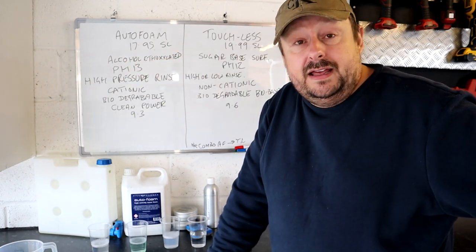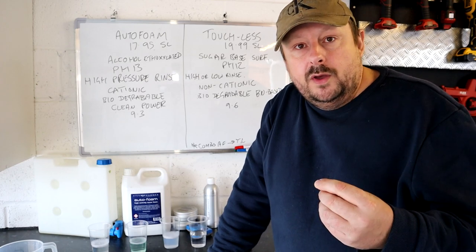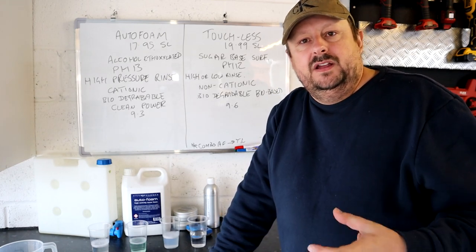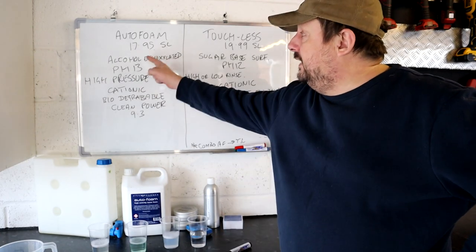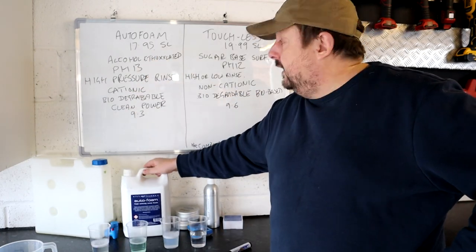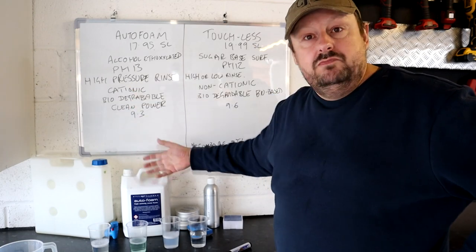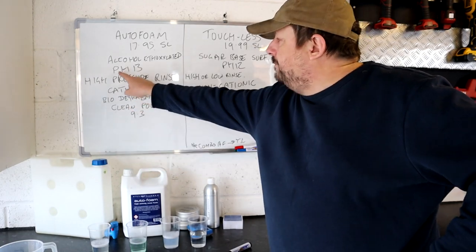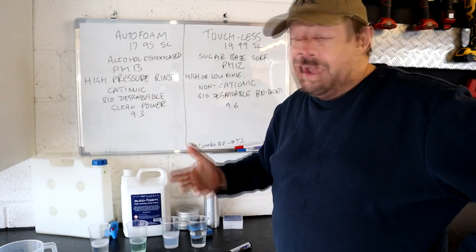Auto Foam is primarily an ethoxylated alcohol-based surfactant. That's the type of material that they're using predominantly in this product here. And this is the old bottle, the old design, they've got new containers now. It's pH 13, so it's a strong alkaline.